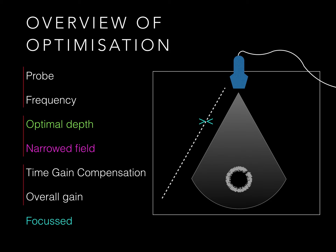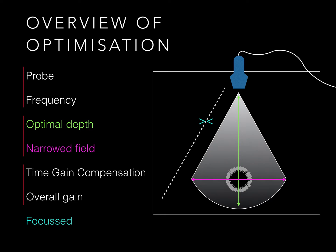We also need to optimise depth and width of the field. Adjust the time gain compensation to get the same brightness from top to bottom, and dial up the best overall gain. Finally, don't forget to make sure that focus is at the depth of interest if your machine has manual focus.